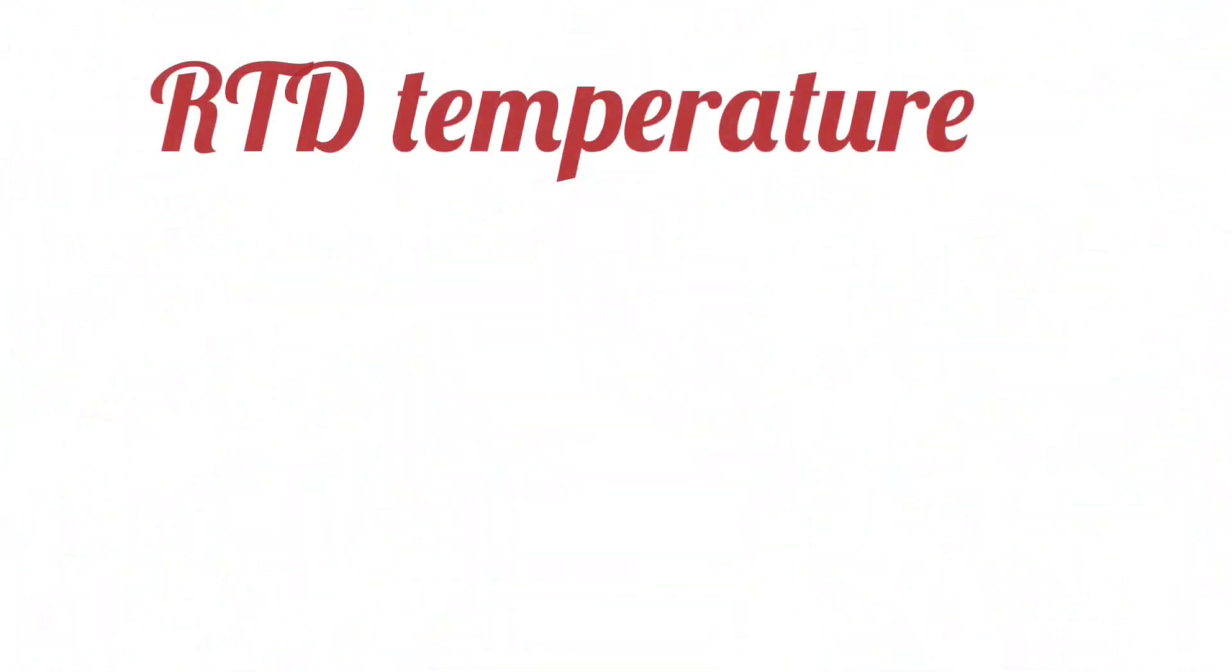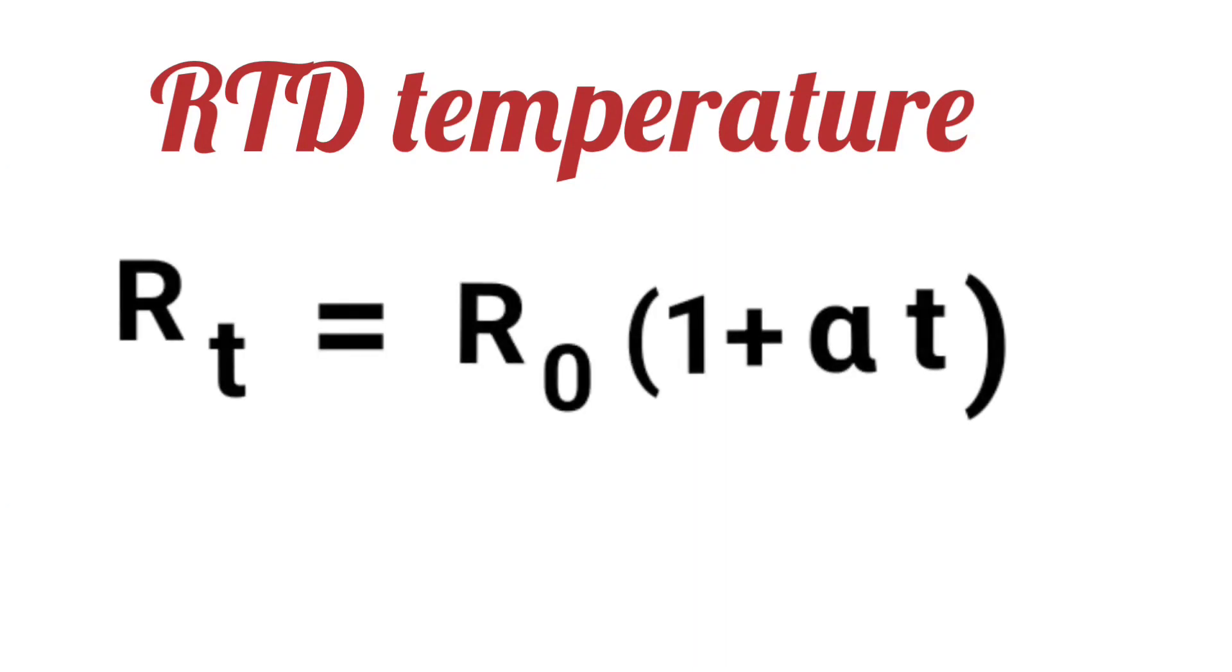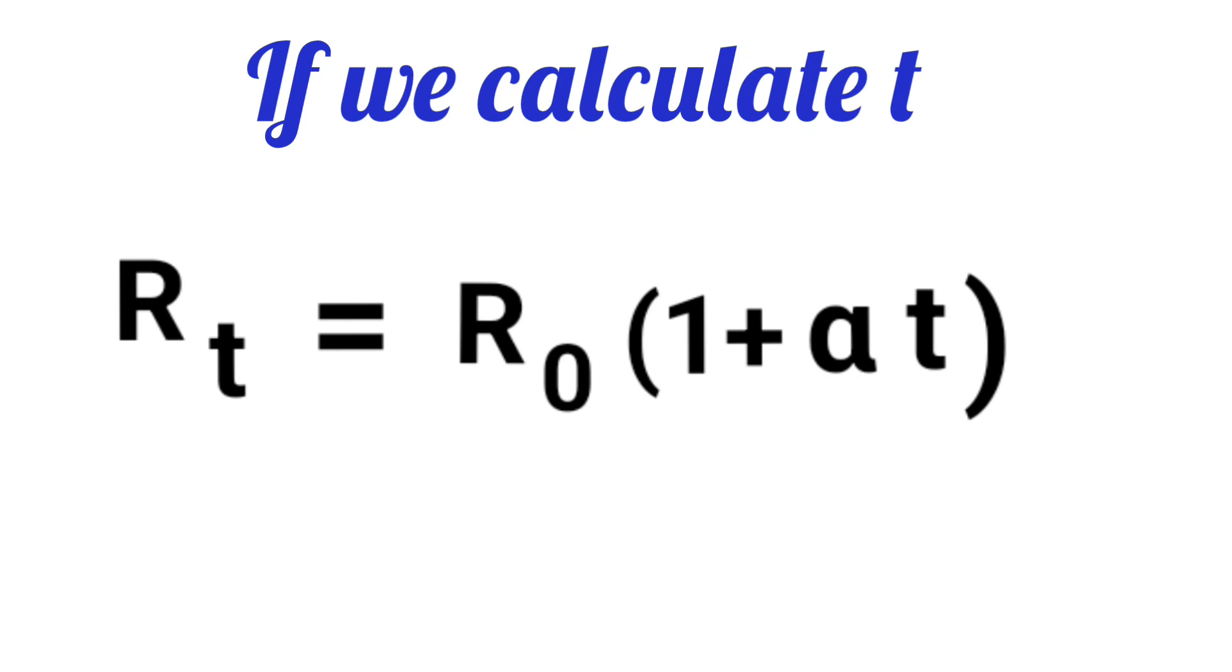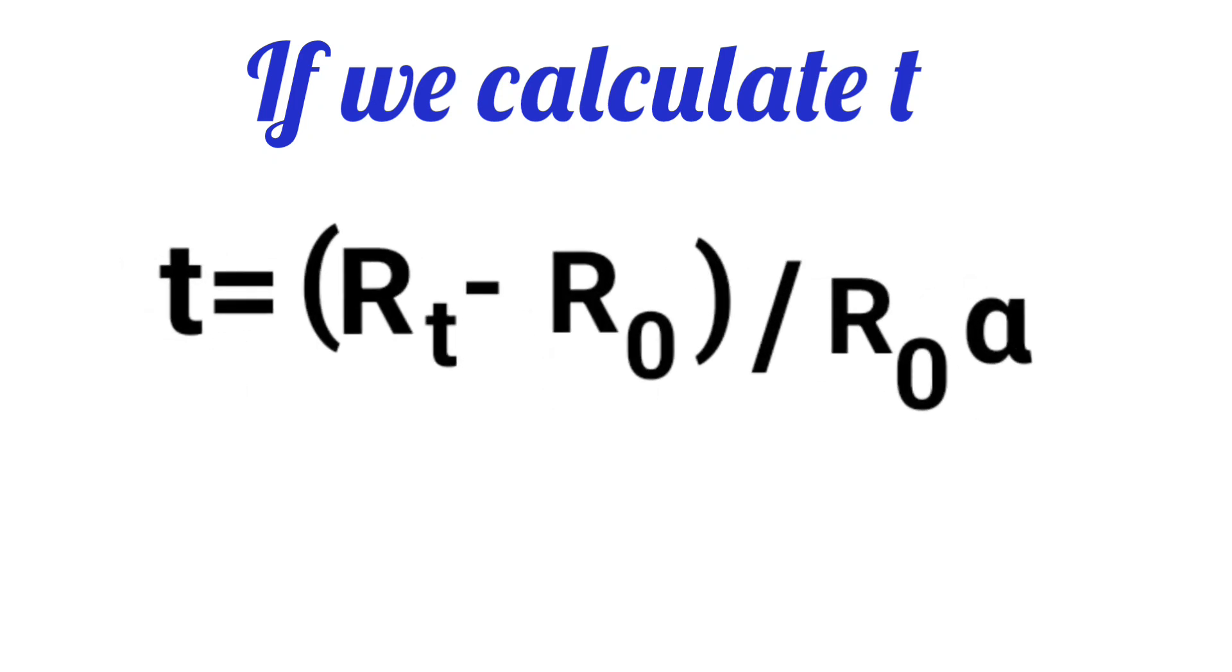Well friends, the temperature calculation formula of RTD is R_t equals R_0(1 plus alpha t). If t means temperature is calculated from here, then it will become t equals (R_t minus R_0) divided by R_0 alpha.